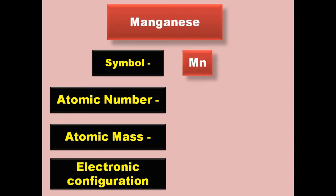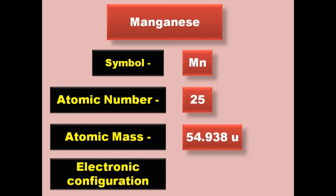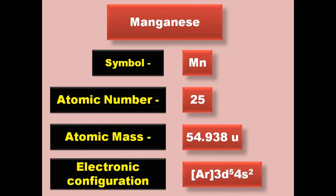Manganese has symbol Mn, atomic number 25, atomic mass 54.938, electronic configuration [Ar] 3d5 4s2. Manganese is a transition metal and exists in solid form at room temperature.